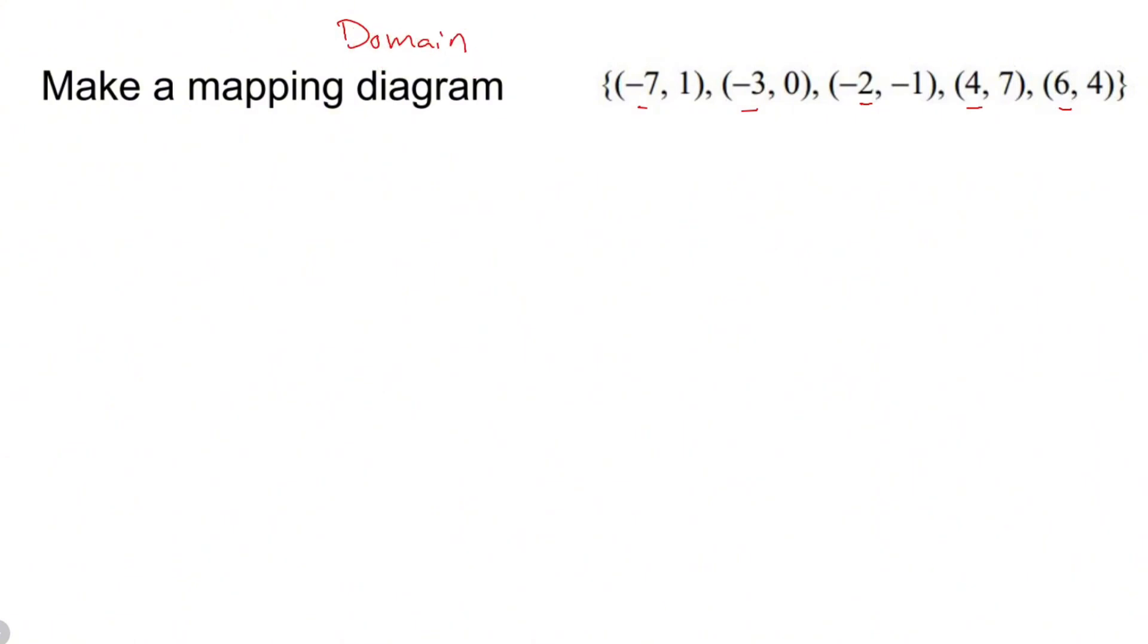You have your second number in the ordered pair, which is your range, also known as the y values. Domain can also be called input. Range can also be called output.